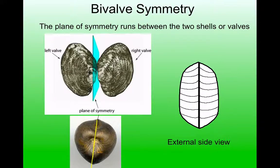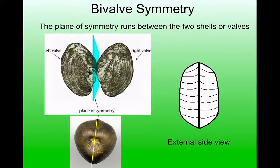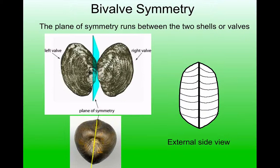Bivalves are perhaps one of the fossils we need to take most care with when identifying, because there are two groups of fossils that both evolved the same solution to life: having two hinged shells. As a general rule, the way we can tell them apart is that bivalves have a plane of symmetry between the two shells. Each individual shell has no symmetry, but the two shells together are symmetrical between them. This is different from brachiopods. It's worth noting that there are exceptions — oysters and scallops don't follow this rule — but as a general rule of thumb, it's not a bad one to start with.